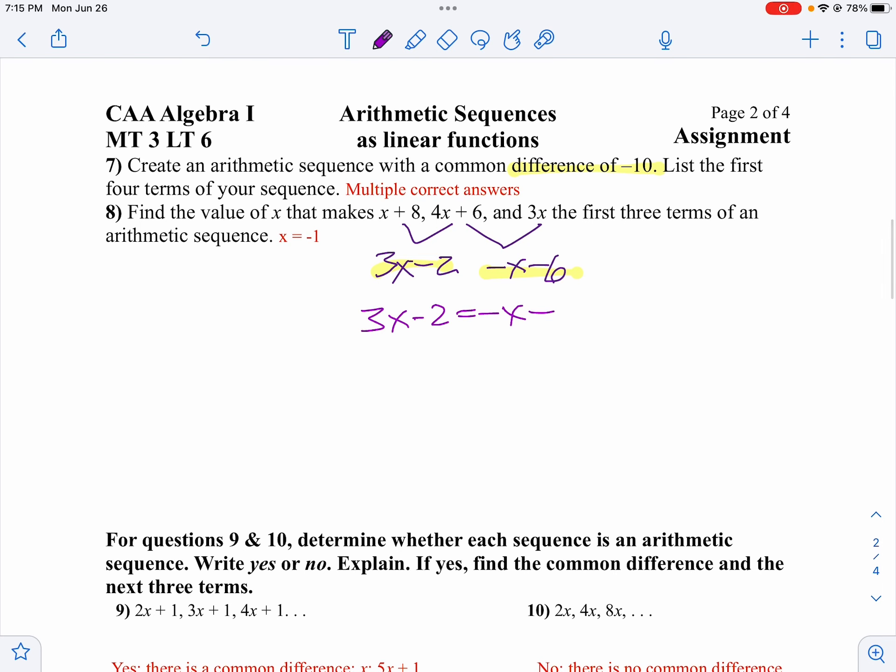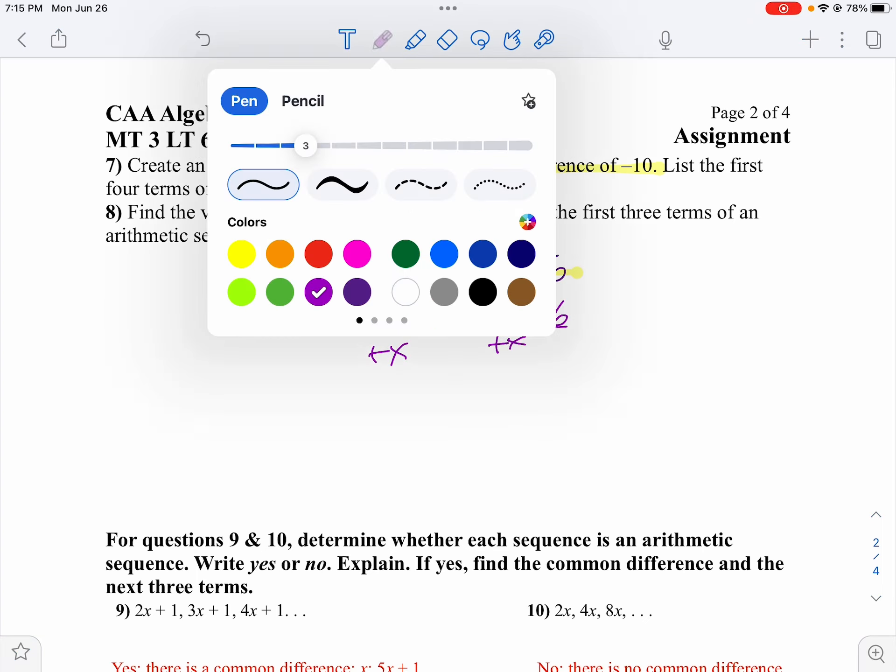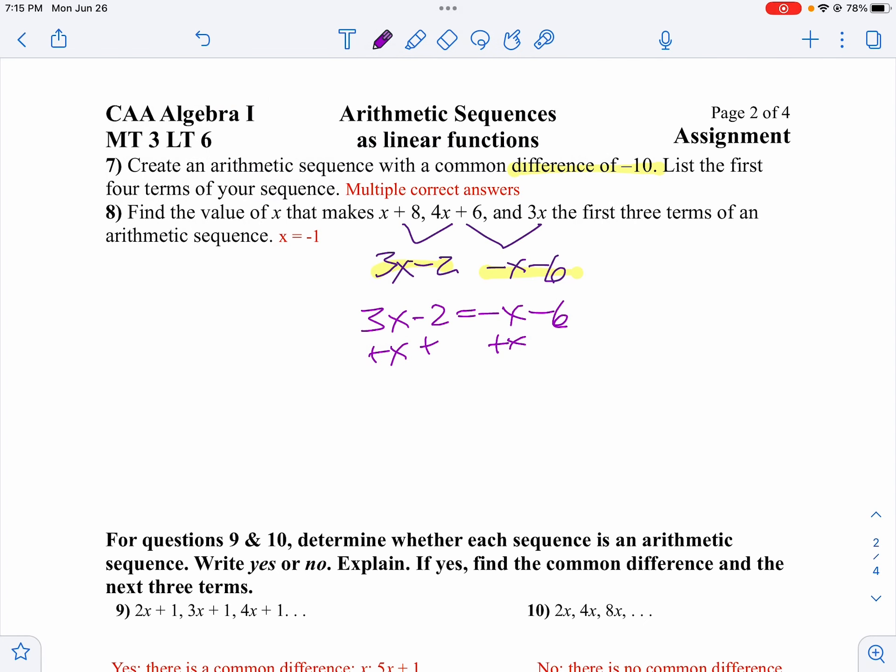So now what we can solve for x, so we'll add x to both sides. At the same time, we will add 2 to both sides. So then we get 4x equals negative 4, divide both sides by 4, x is negative 1. That's how we get the negative 1 answer there.